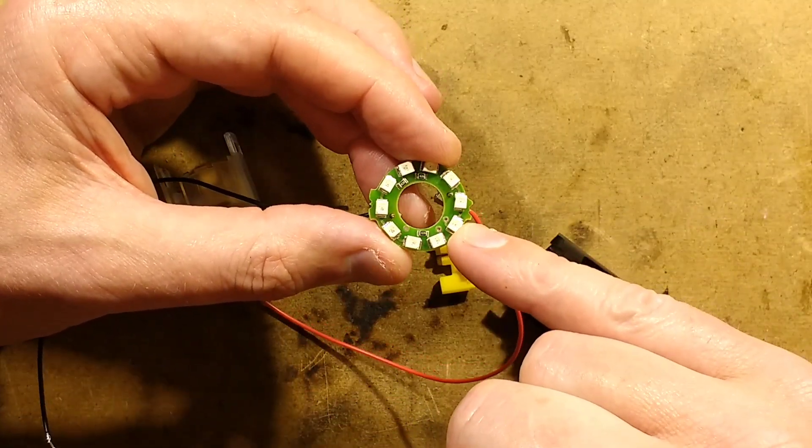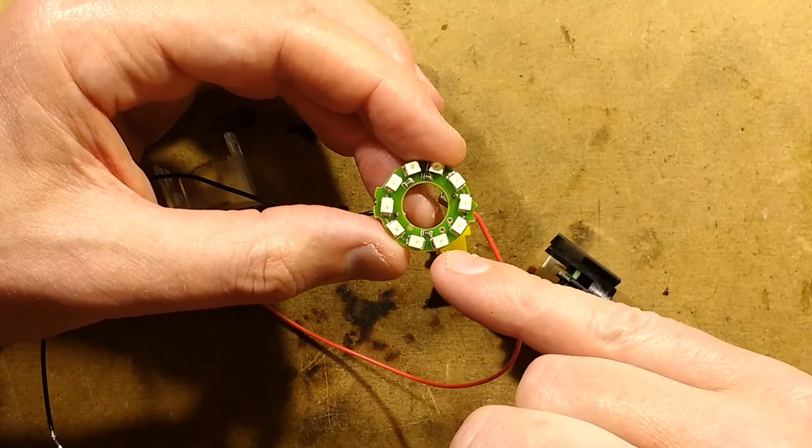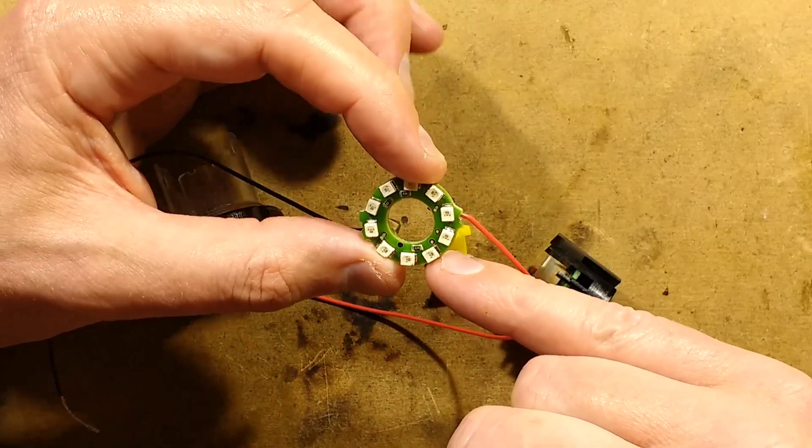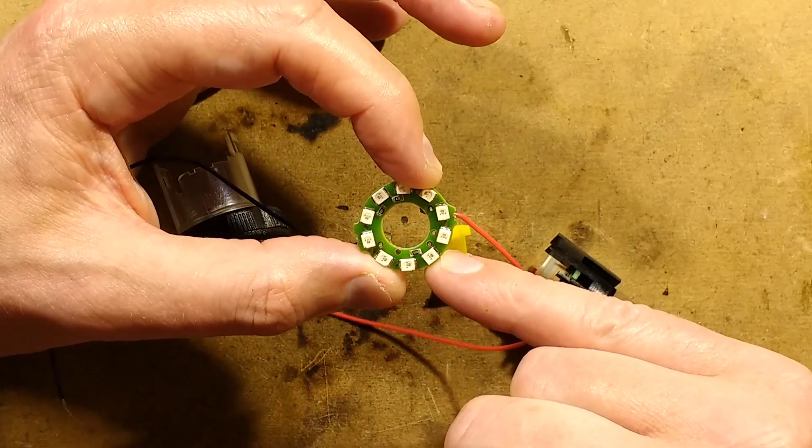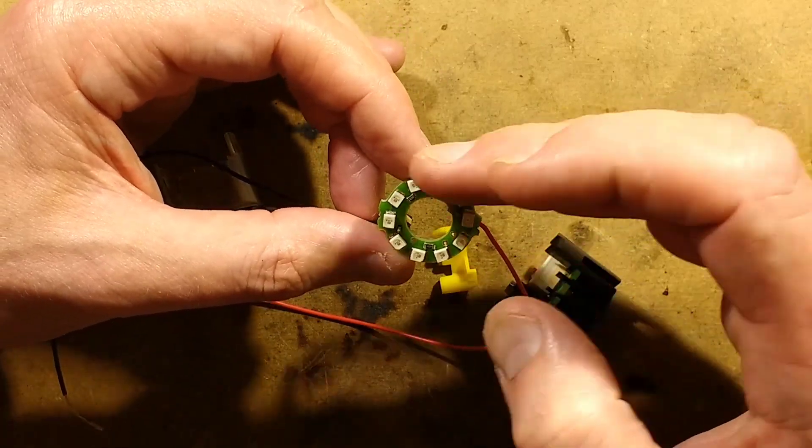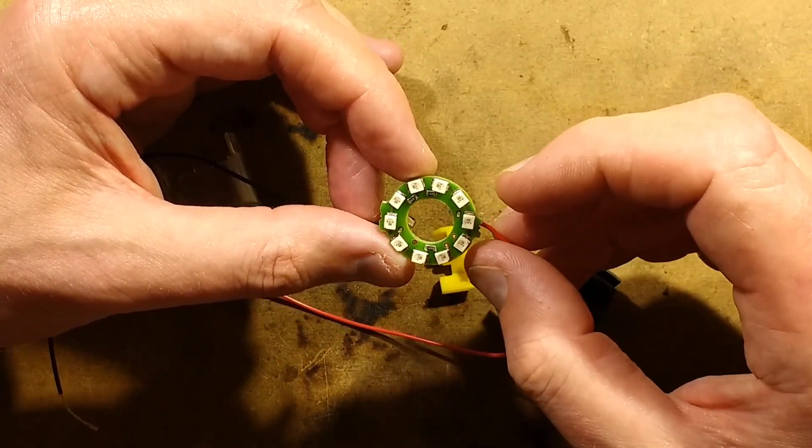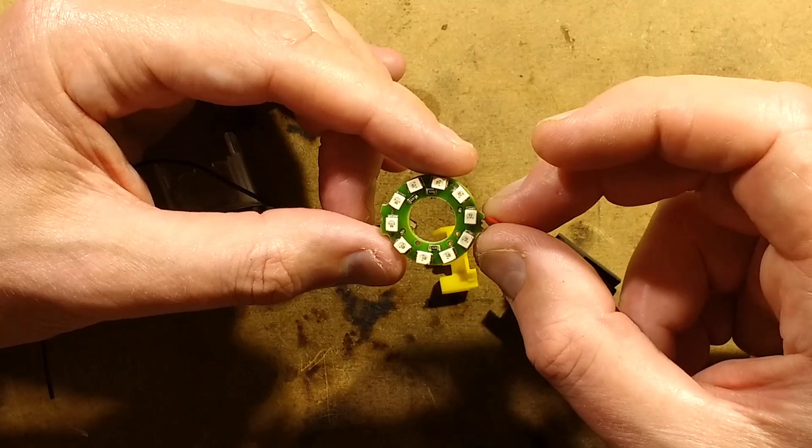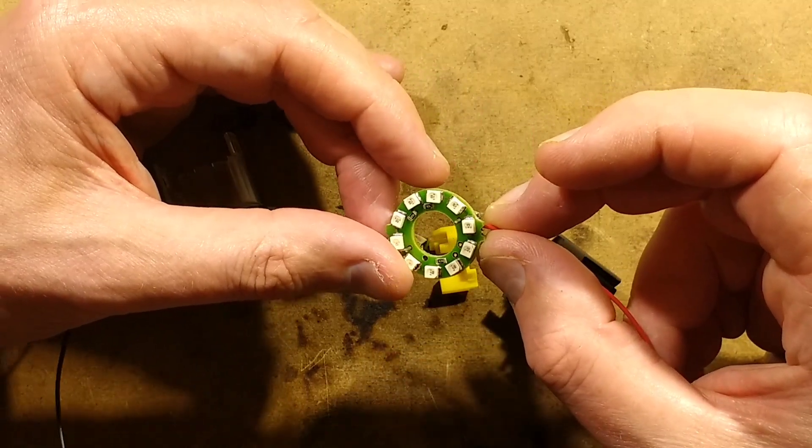The circuit board started conducting at about 15 volts and continued conducting increasing current up to 24 volts. There's one, two, three, four, five, six, seven, eight, nine, ten LEDs. I get the feeling that those LEDs may all be in series.